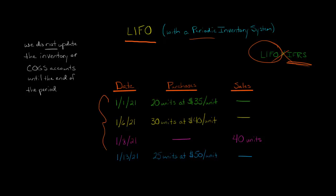Let's say that we have a series of transactions here for a retail company. They buy goods and turn around and sell them at a marked up price. We've got a series of purchases and then a sale. On January 1st, they purchased 20 units at $35 a unit. Then five days later, they purchased 30 units at $40 a unit. Then on January 8th, they sell 40 units. And then January 13th, they purchased another 25 units at $50 a unit.